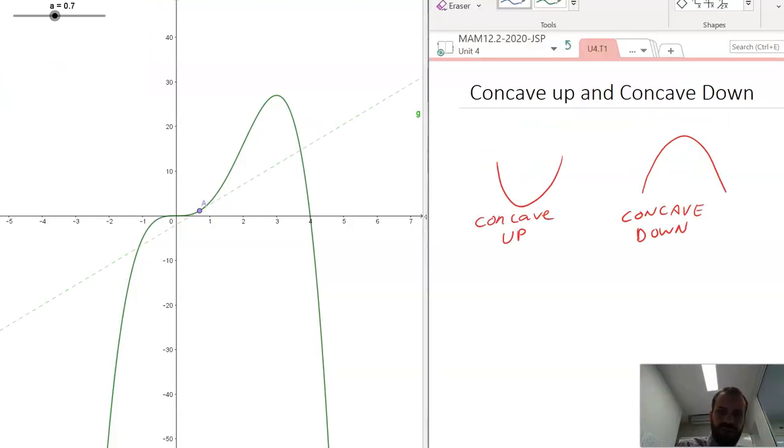Now, when we look at these pictures here, you can see that when I've drawn my concave up, if I draw some tangents to that graph, the tangents all have something in common. They're all underneath the graph, and that's a good definition of concave up.